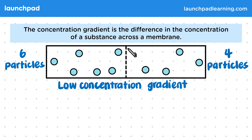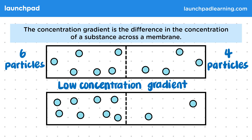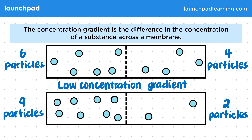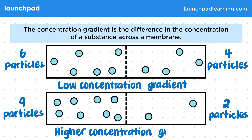This dotted line indicates a partially permeable membrane. In this image we have nine particles on the left hand side and two particles on the right, which is a higher concentration gradient compared to the one above. Remember that the direction of diffusion is down the concentration gradient — from an area of higher concentration towards an area of lower concentration.